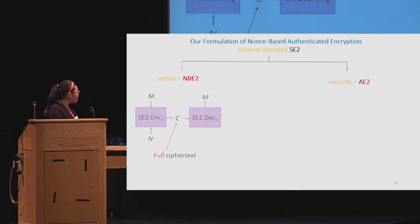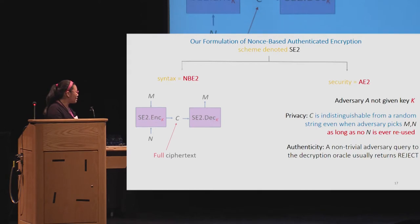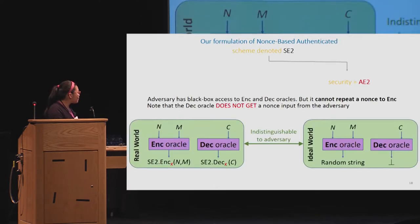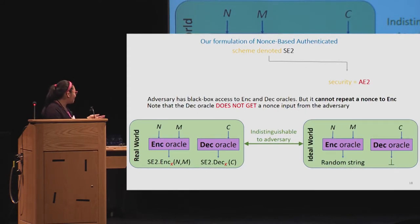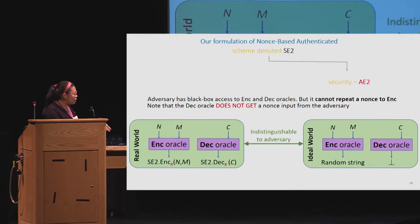Security is not too different from the initial notion — we basically just extend it to cover the new syntax. The only thing to note is that decryption now doesn't get N as an input anymore, and the encryption oracle should return a random string of a length comparable to the full ciphertext, not the core ciphertext.